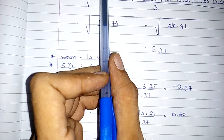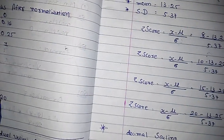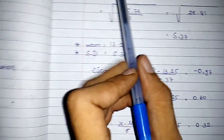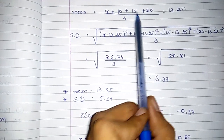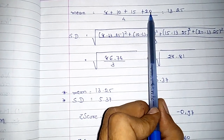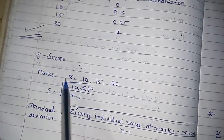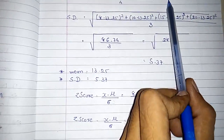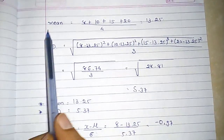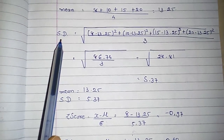First of all you have to find out the mean of the values. To find the mean you add all the values and divide by the number of elements. So here 10 plus 4 plus 8 plus 10 plus 15 plus 20, divided by 4 because of this marks attribute, and you will get 13.25 — that is your mean.